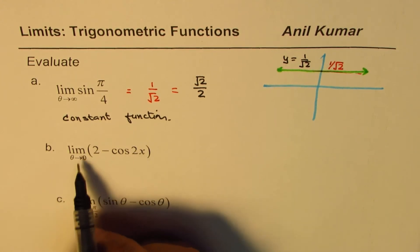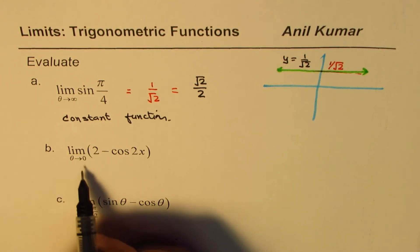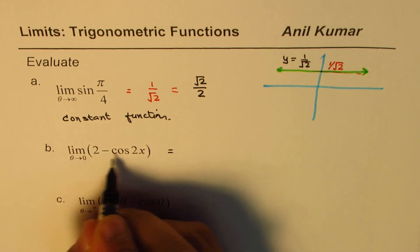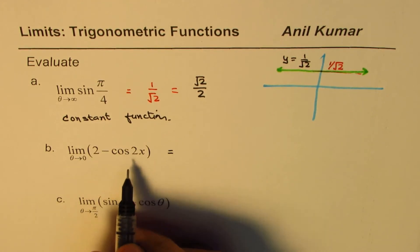Now the next one here is to find limit when theta approaches 0, all these are in radians. So in this case, the first step is always to substitute and check. Now since these are continuous functions, we could always do that.